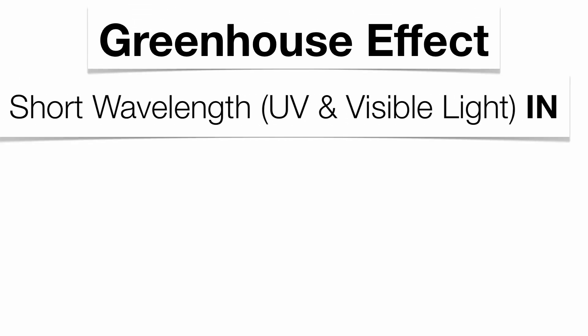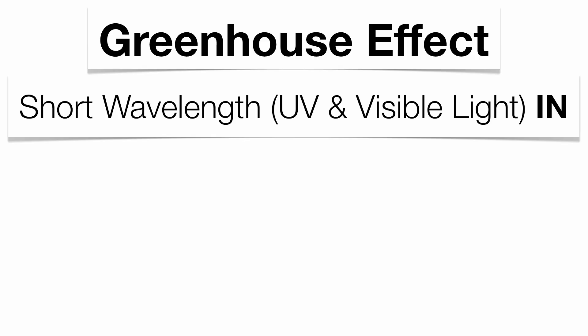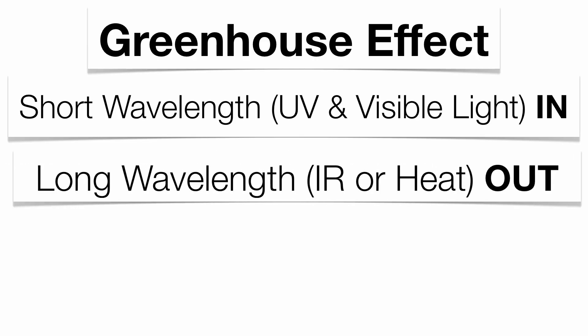Short wavelength energy from the sun, specifically ultraviolet and visible light, comes in and strikes the surface of the Earth. Darker colors like the continents and plants are going to take in that energy, but they're also going to give it off as well. Good absorbers are also good radiators of energy. So the darker colors are going to give off long wavelength, or infrared — what we know as heat energy — back out into the atmosphere, and that's basically what warms the atmosphere.